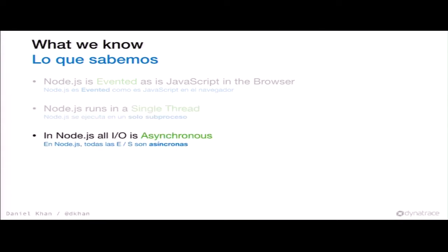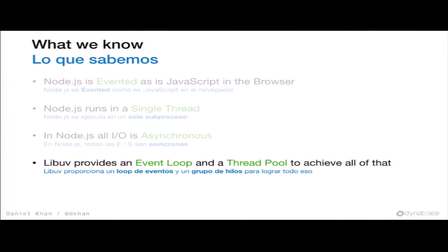In Node.js, all I/O is asynchronous. There's a nice saying: everything in Node.js is asynchronous except your code. You hear that quite often. And there is something called LibUV that provides an event loop and a thread pool — and this basically does all of that.